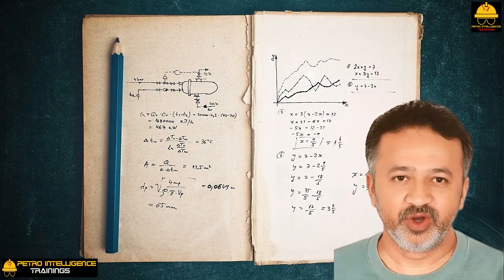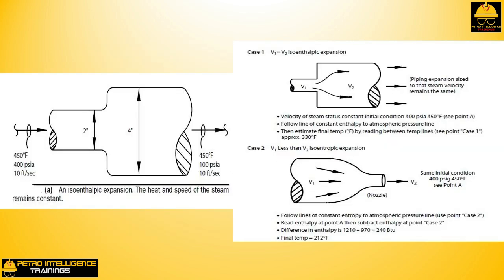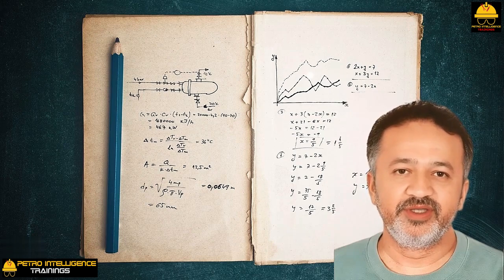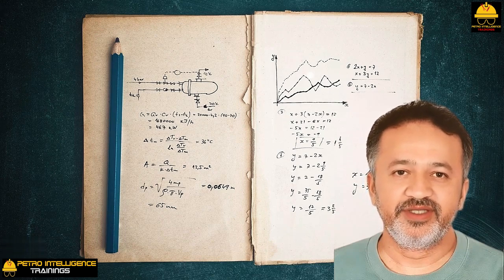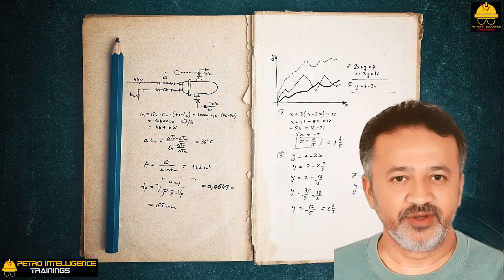In an isentropic process, the heat content of the steam decreases and its entropy is constant, provided that the process is fully reversible as shown in the picture. In an iso-enthalpic process, the heat content of the steam remains constant and its entropy increases as shown in the picture.